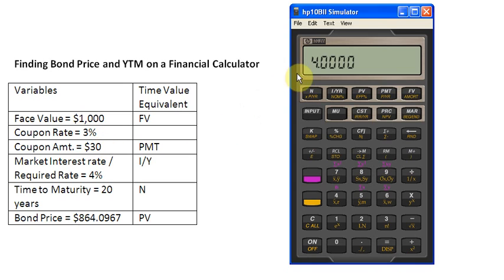So, we have entered the discount rate here. Now, we are needed to enter the time to maturity that is our N. So, I press 20 here and store it into my N button here.